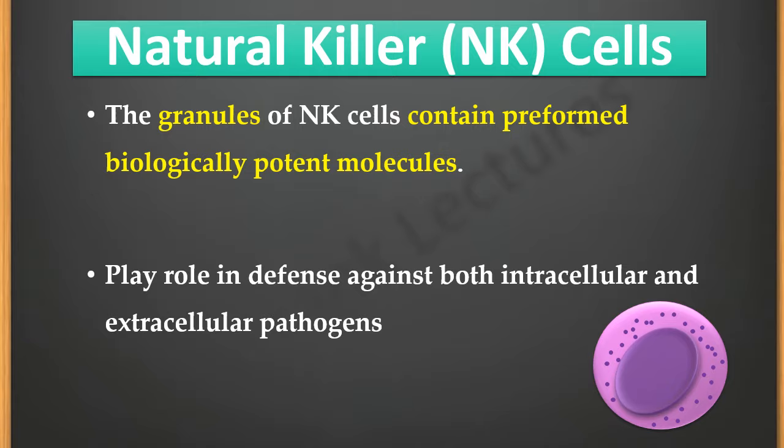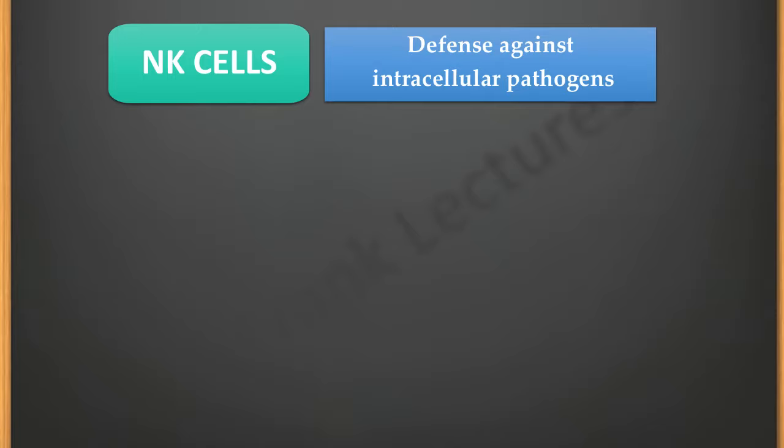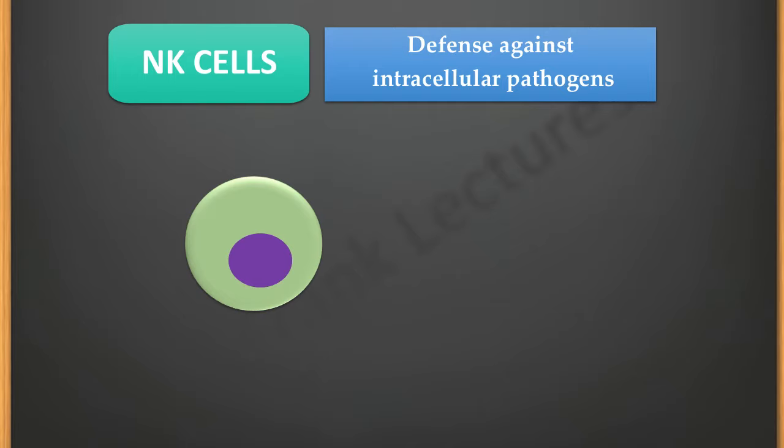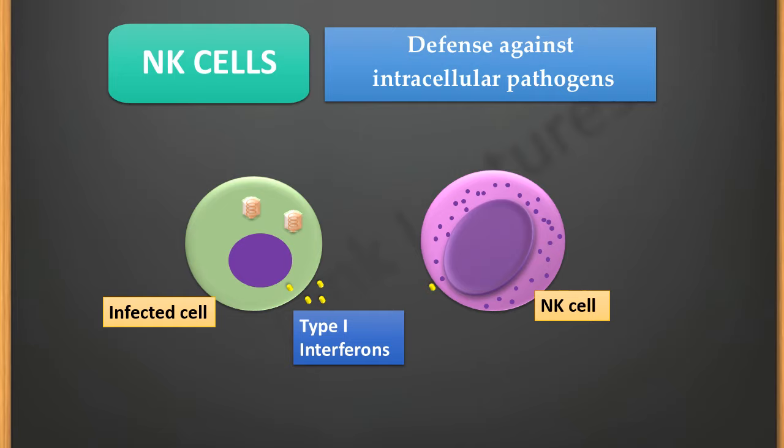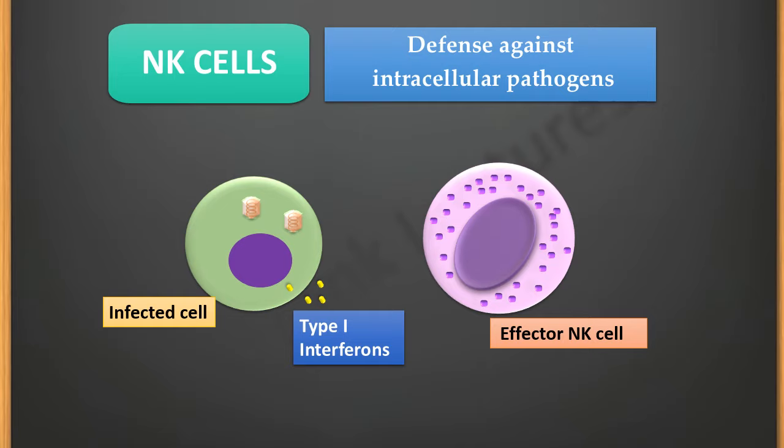Let us now understand how NK cells defend against intracellular pathogens, for example viruses. When a cell is infected with a virus, the cell secretes type one interferons. These interferons bind to the interferon receptors on the NK cells, and as a result NK cells get activated — they proliferate and differentiate into effector NK cells.